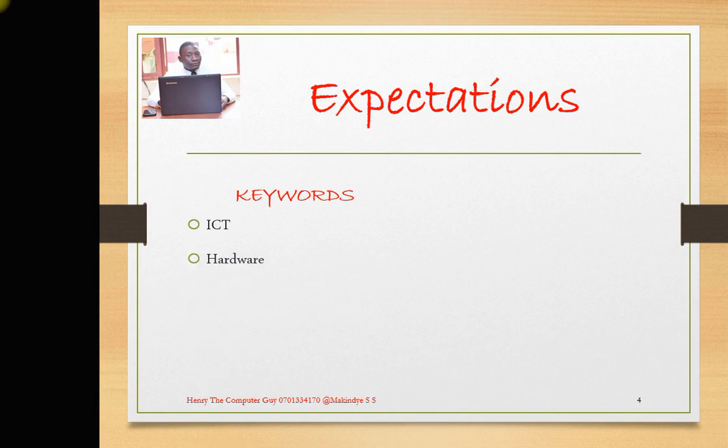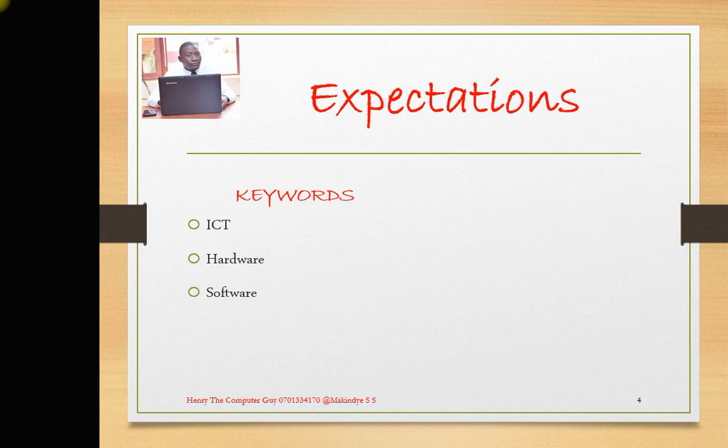We shall talk about hardware, which are specifically the physical or tangible components of a computer — something that you can touch and feel. Then software — these are the programs that run on your computer. You have a phone, you install WhatsApp; that WhatsApp is going to be software. Remember, it is intangible, so it can tell your hardware what exactly you want to do.